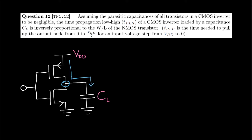As a result, some current will flow into this load capacitance until the output node is pulled up to VDD. The magnitude of this current is determined by the aspect ratio of our PMOS transistor. Since the NMOS transistor is completely closed off to any current, the aspect ratio of that transistor doesn't really have anything to do with this propagation time. Therefore, the statement above has to be false.